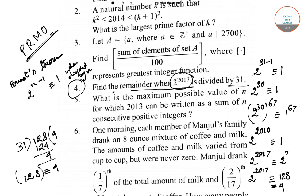This was our problem, solved with the help of Fermat's theorem. Fermat's theorem says that 2 to the power n minus 1 gives a remainder of 1 when divided by n. Here, 2 to the power 30 gives a remainder of 1 when divided by 31. Similarly, (2 to the power 30) to the power 67 gives a remainder of 1, so 2 to the power 2010 gives remainder 1.